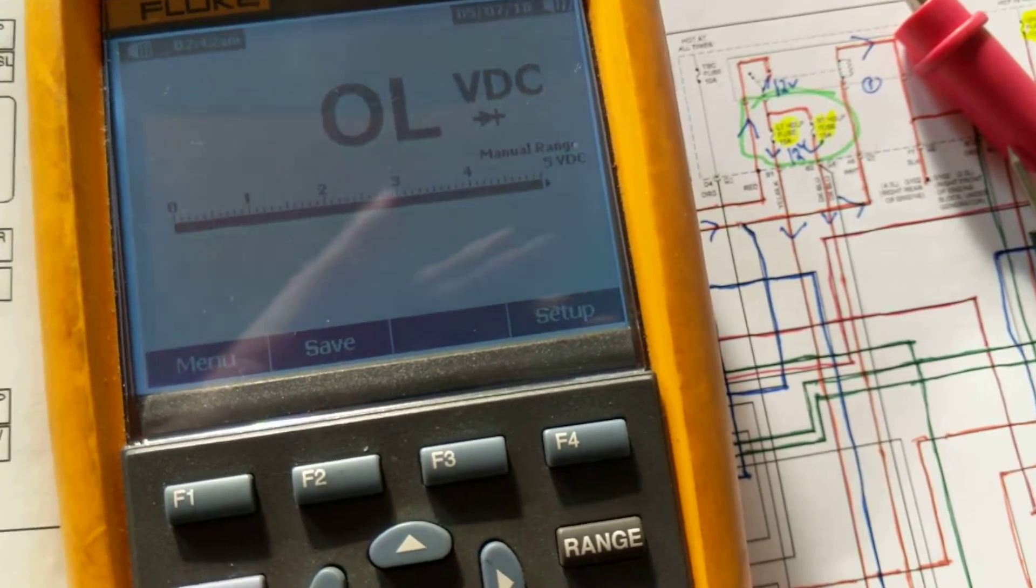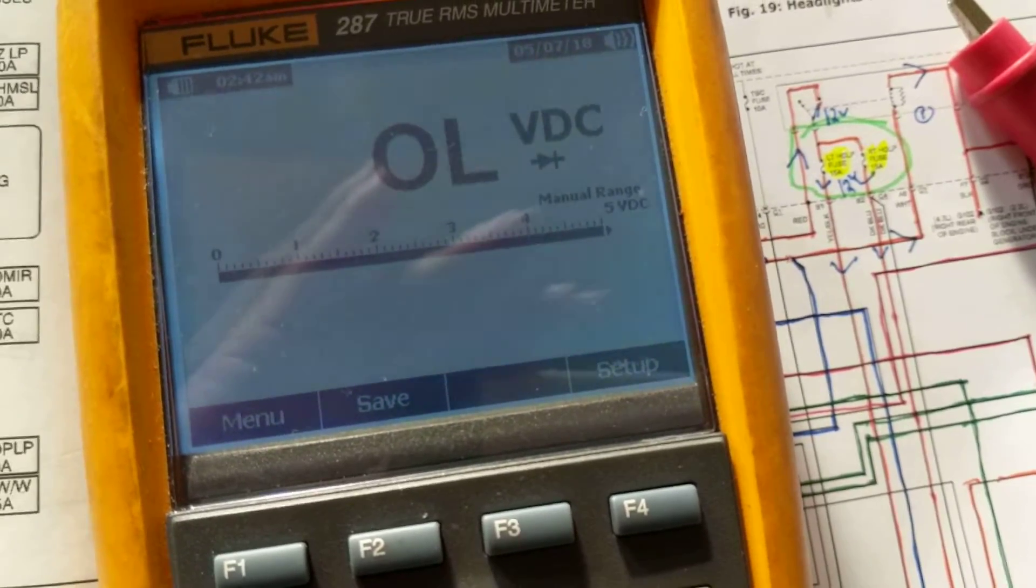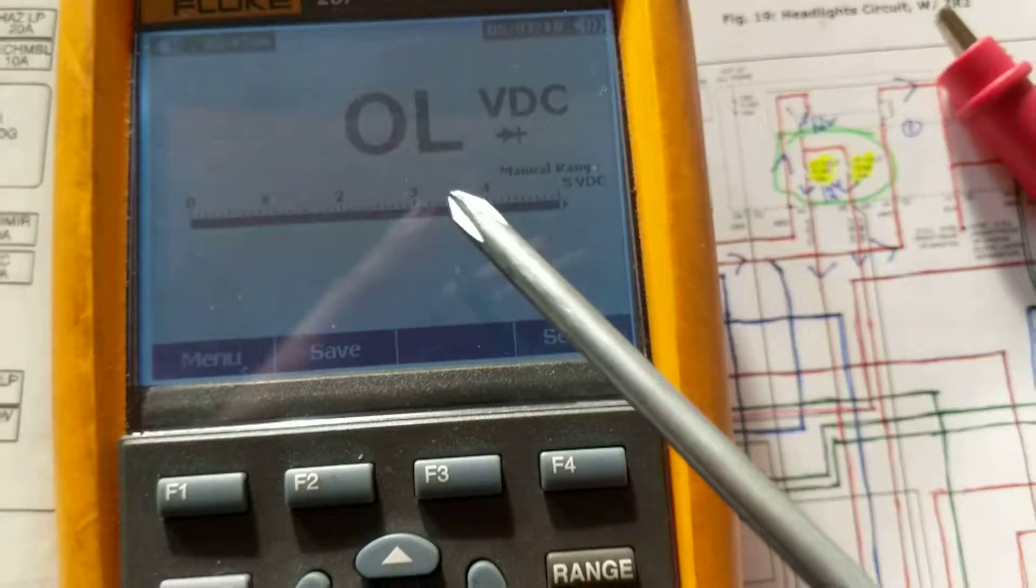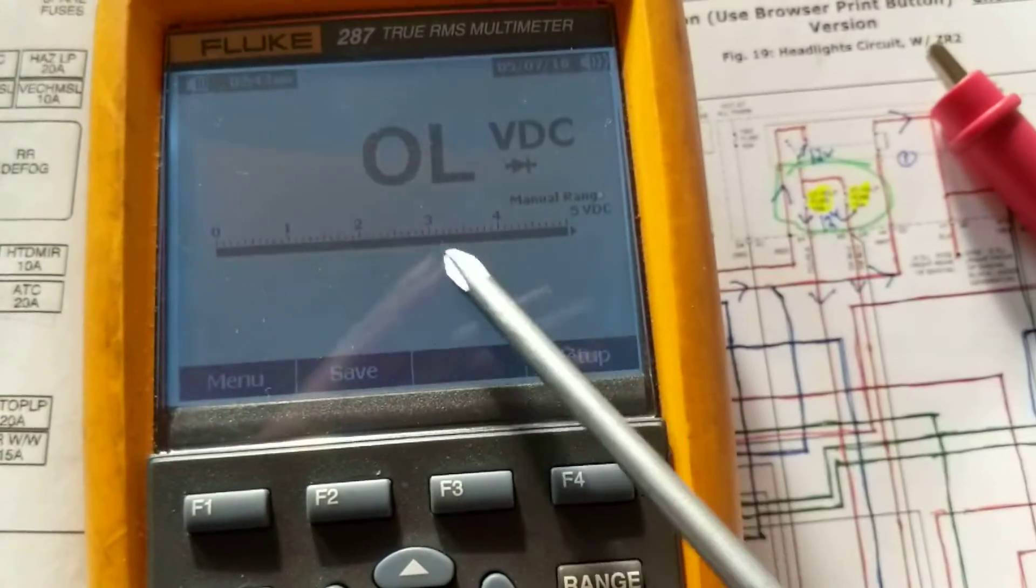And you can measure it forward bias. In reverse, if you remember, it would be reverse bias. It would be out of limit or out of range because it's high ohms.